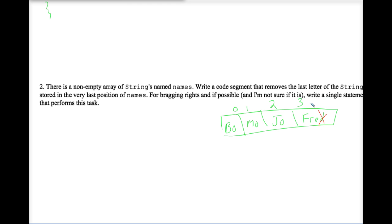Now it's possible to do this with a single line of code. We're writing a code segment here, not a whole method. So maybe we have a variable that's a string called lastWord, and it's set equal to nothingness. And then we set lastWord equal to names square brackets names.length minus one.